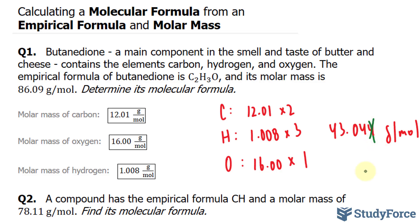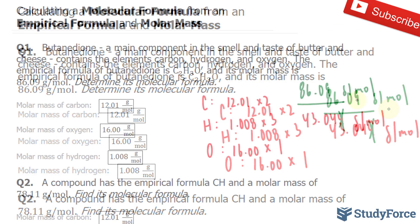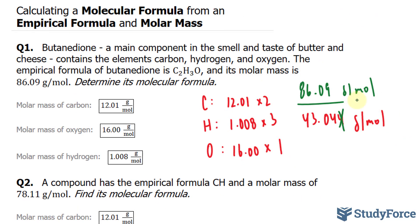Now we found the molar mass of the empirical formula, and we know the molar mass of the actual formula, it's 86.09. Usually the empirical formula is the reduced version of the molecular formula. So what we can do is take the larger number and divide it by 43.04. So I'll take 86.09 grams per mole and divide it by 43.04. That will give us a factor, let's call that factor N. That number N will then be multiplied to each of these subscripts.